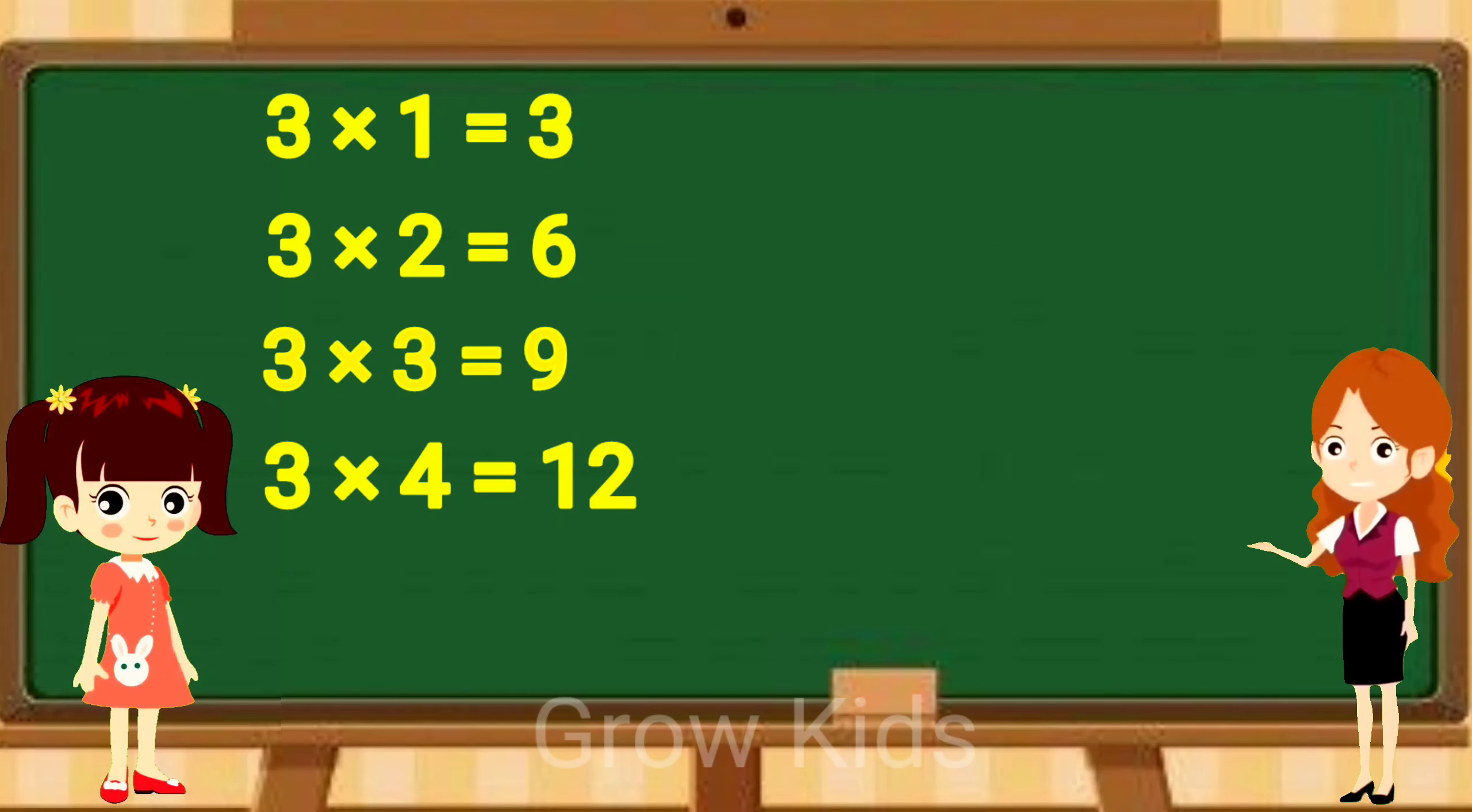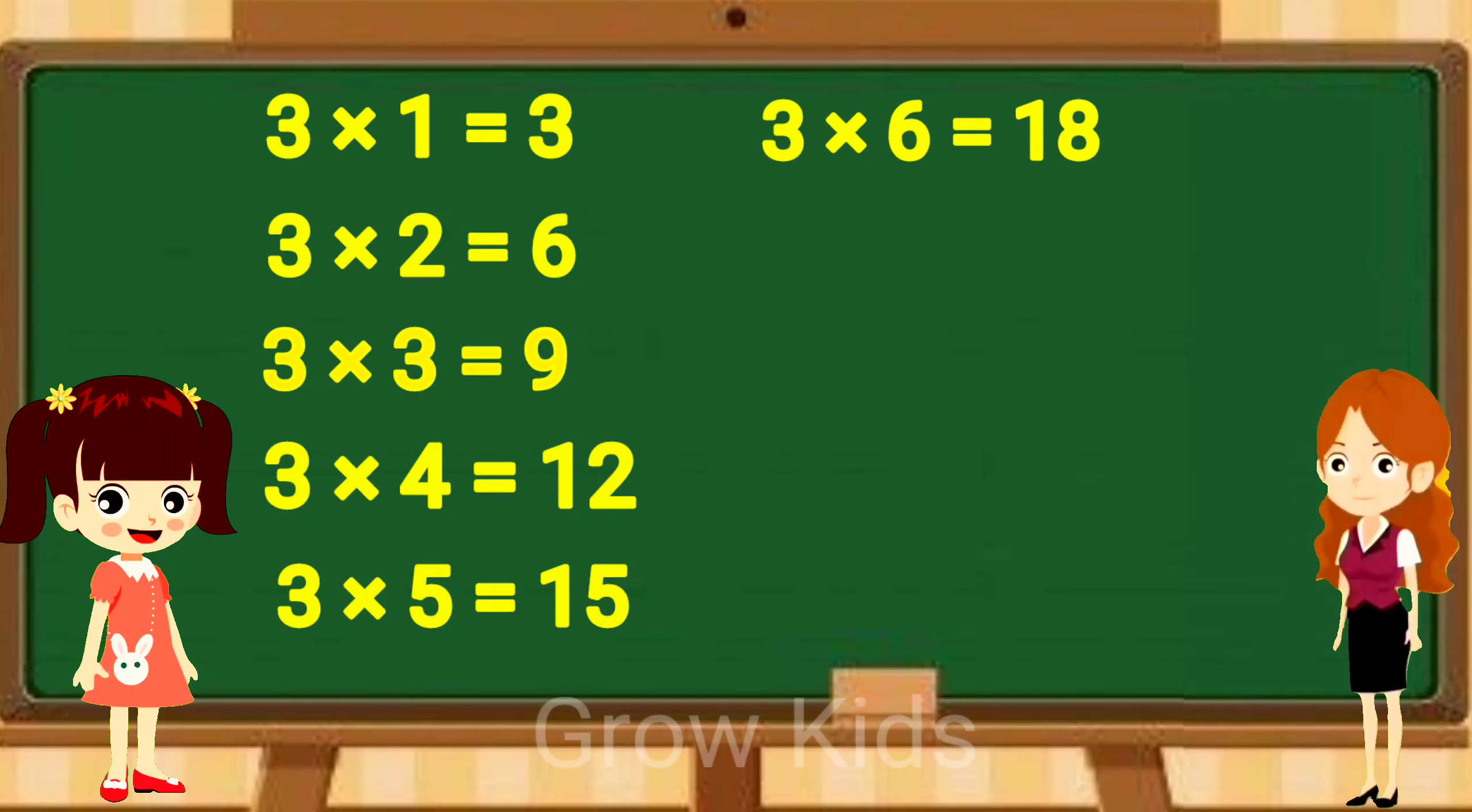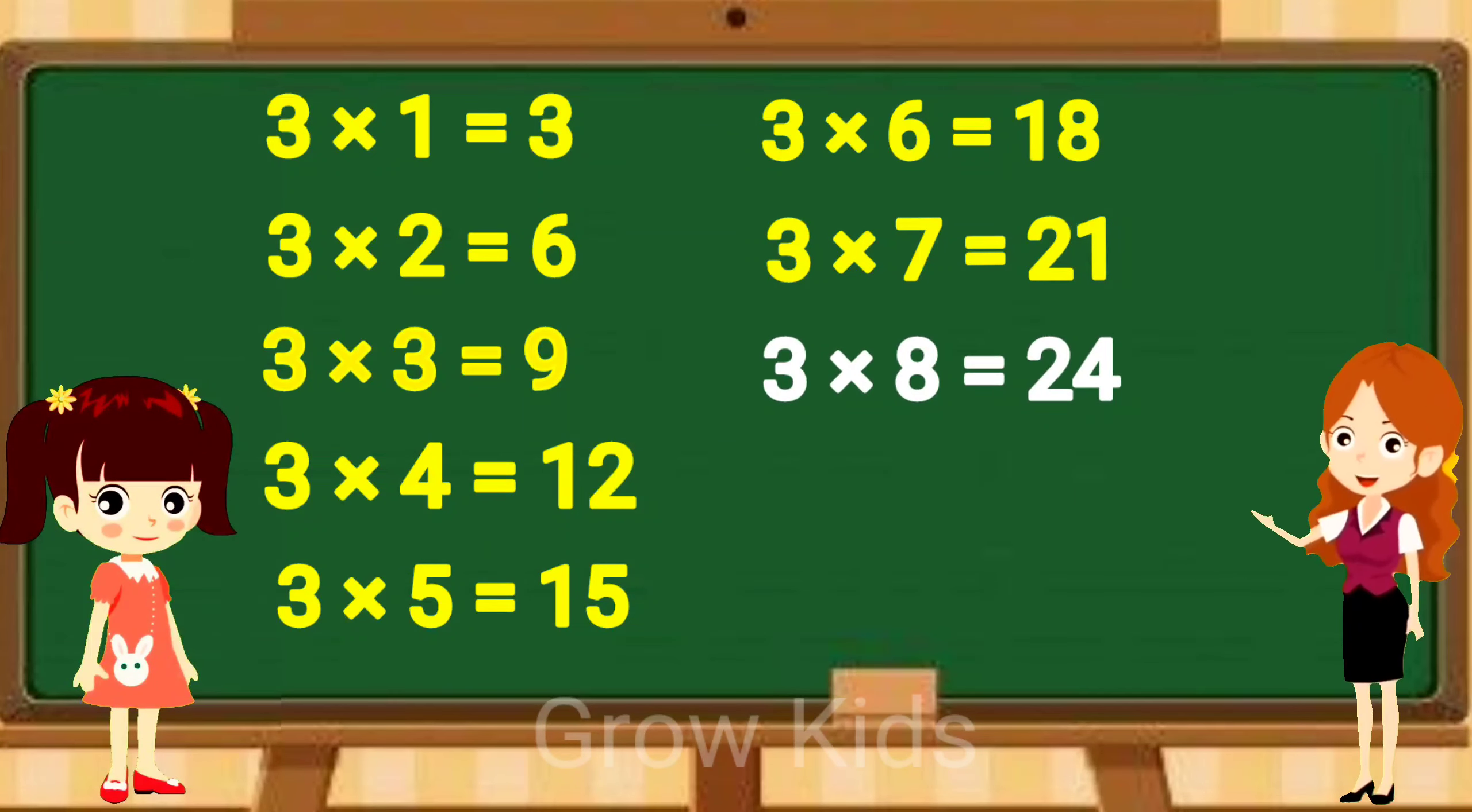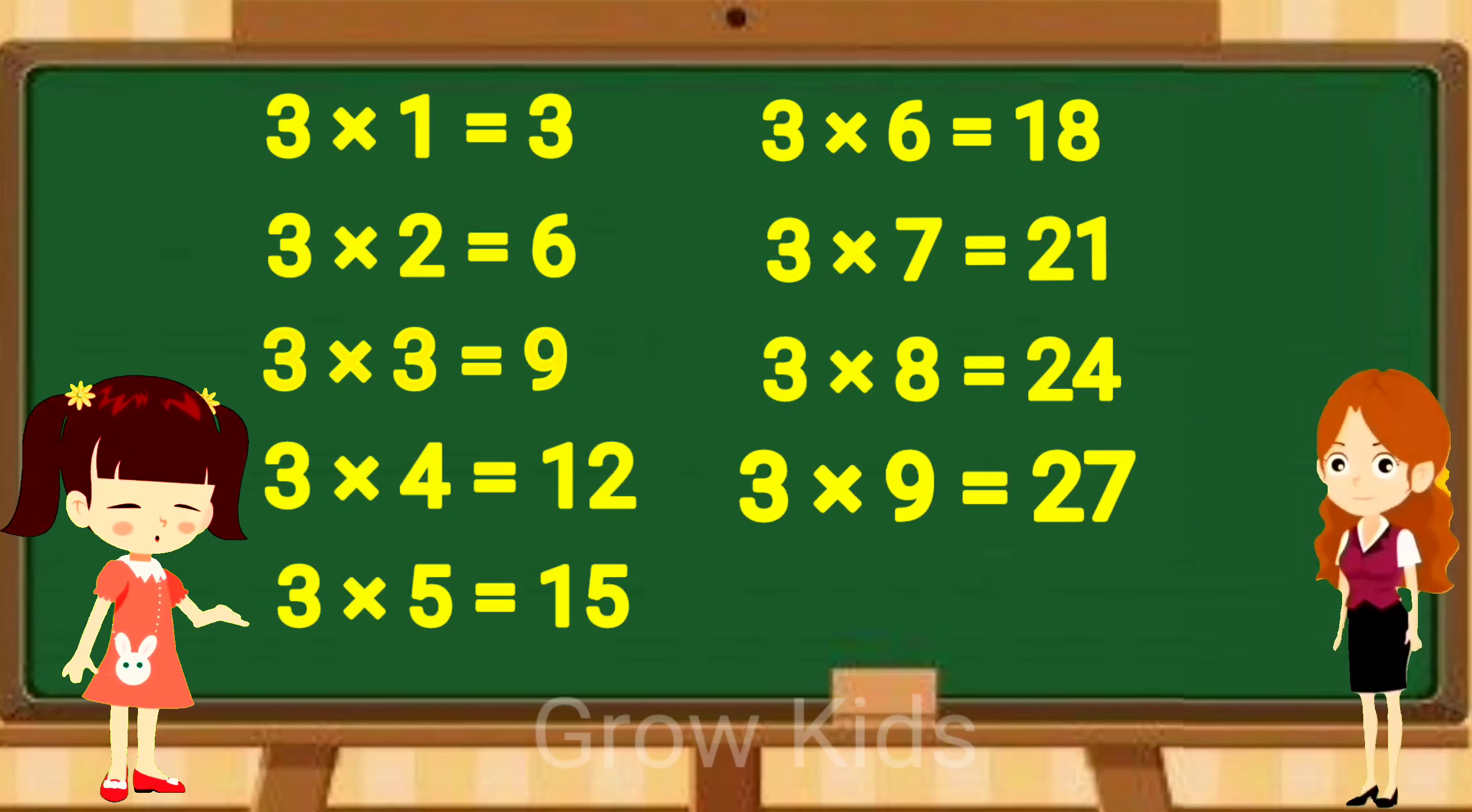3 5s are 15, 3 5s are 15. 3 6s are 18, 3 6s are 18. 3 7s are 21, 3 7s are 21. 3 8s are 24, 3 8s are 24. 3 9s are 27, 3 9s are 27. 3 10s are 30.